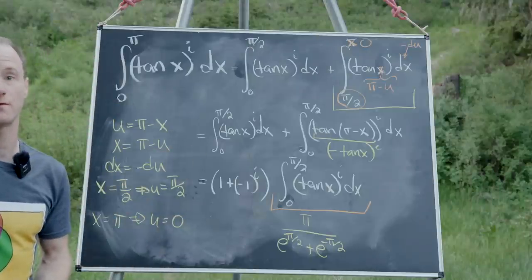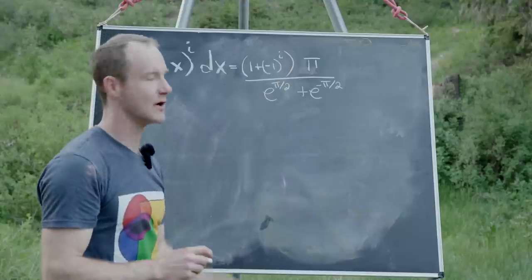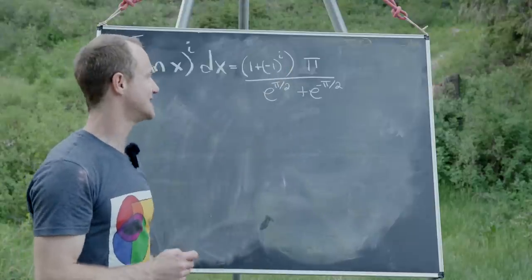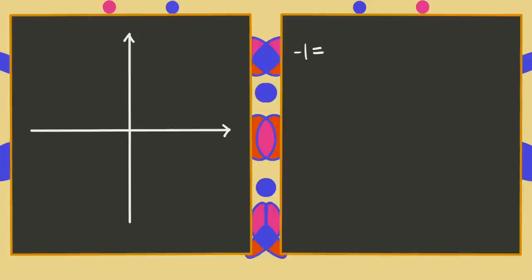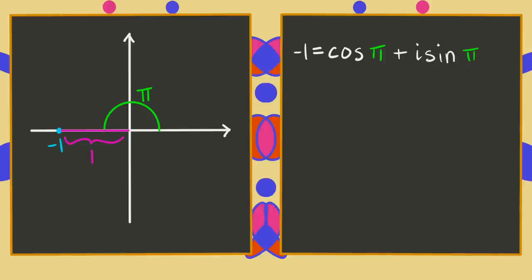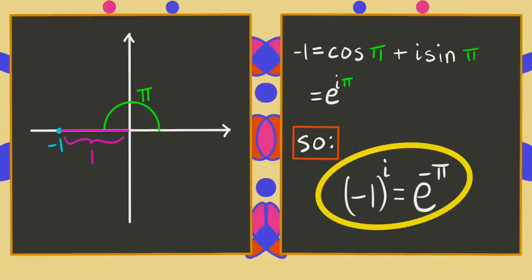On the last board, our goal integral equals (1 + (−1)^i) times π over (e^(π/2) + e^(−π/2)). We now simplify by evaluating (−1)^i using complex numbers. Writing −1 in the complex plane, it has modulus 1 and argument π, so it equals cos(π) + i·sin(π), which gives the famous formula e^(iπ) = −1. Raising that to the i-th power gives i² in the exponent, so (−1)^i = e^(−π).